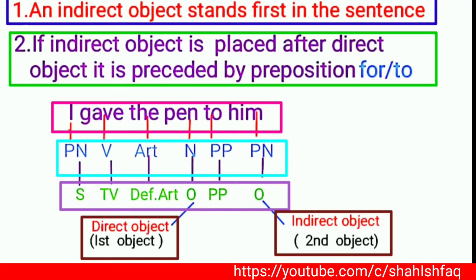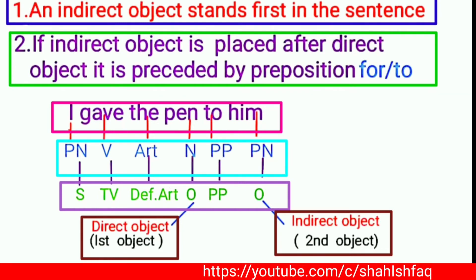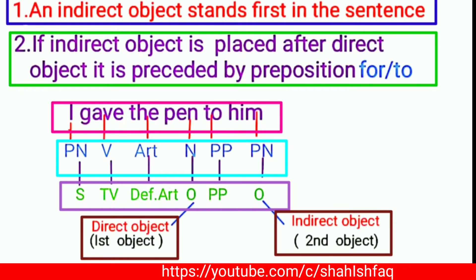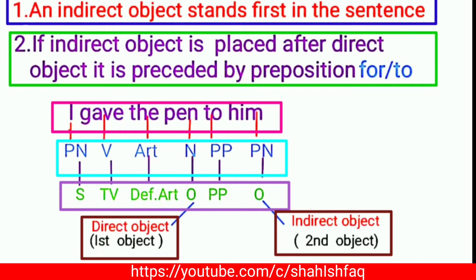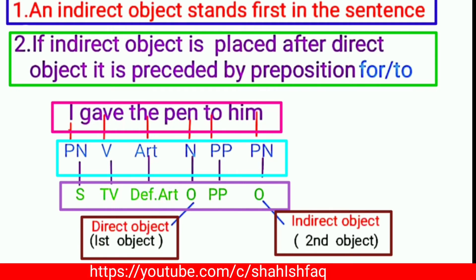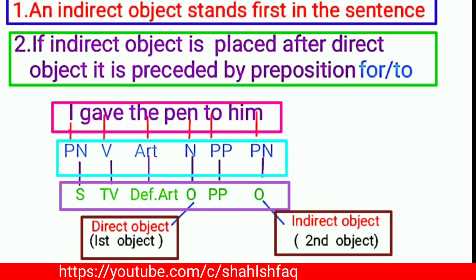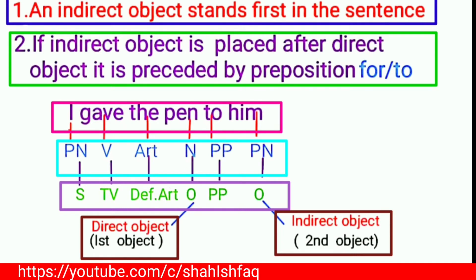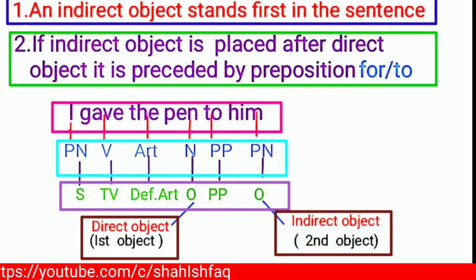So when we have the pattern with indirect object first and then direct object, that pattern is correct. But if you place the direct object first and then the indirect object, you must use a preposition to make the sentence grammatically correct. The sentence structure must be followed properly.